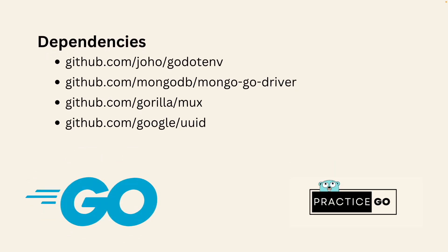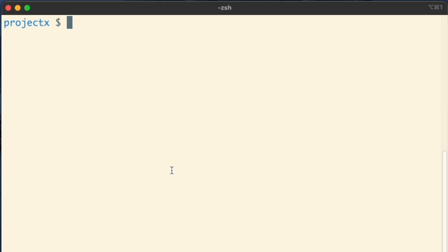For this project, we are going to use four dependencies. The first is godotenv, which we are going to use to read the .env file and environment variables. The next is the mongo-go-driver, used to connect Golang to MongoDB. Then Gorilla Mux, which we use to create our APIs. The last one is uuid, used to generate a unique random string for employee IDs — whenever we create a new employee, we assign them a new employee ID using uuid.